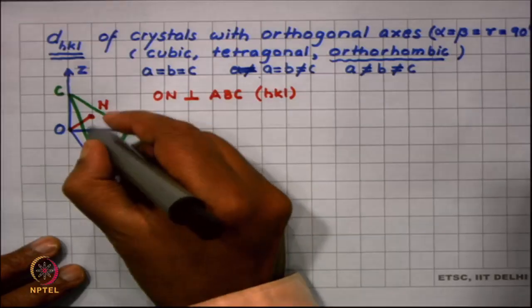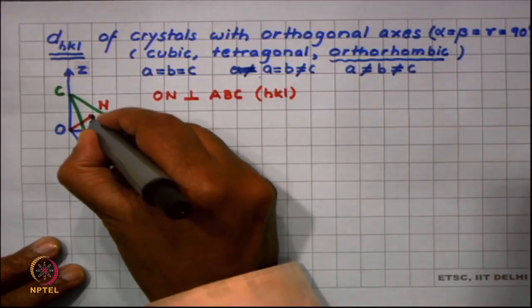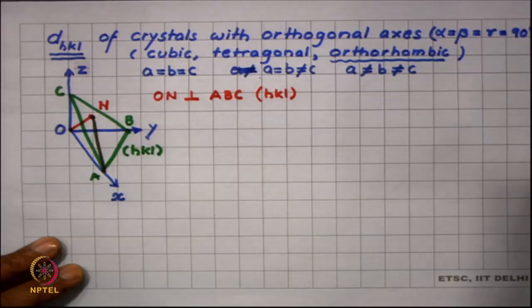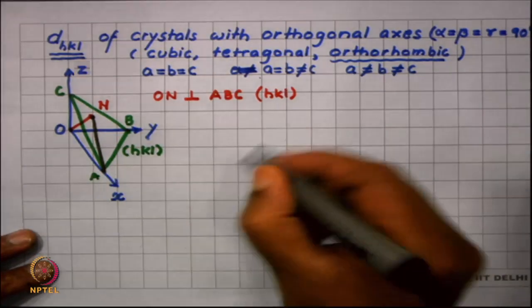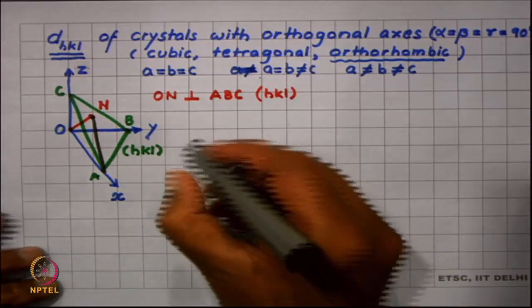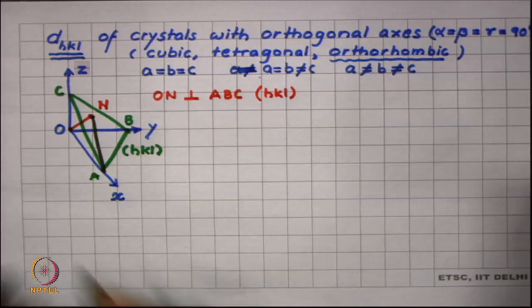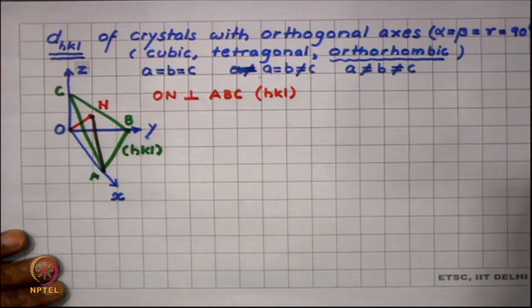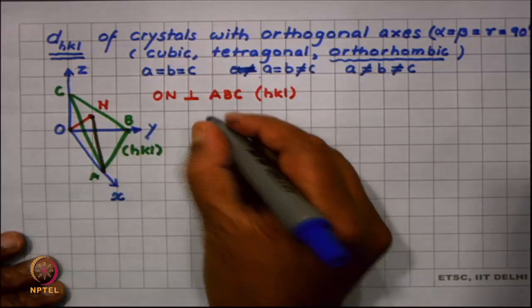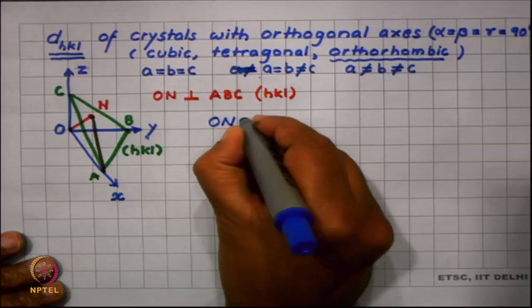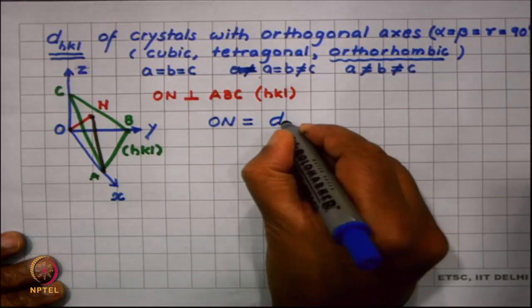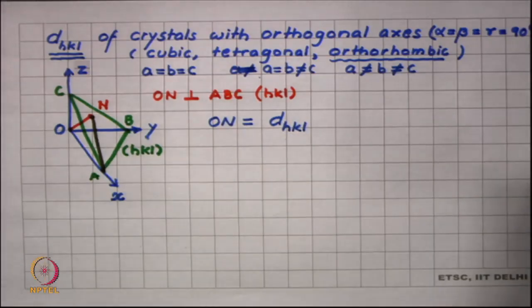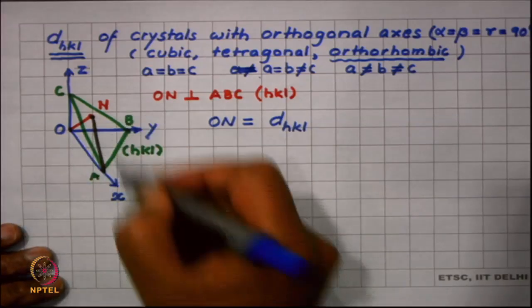Now let me connect n and a and let me look at this triangle ONA. Remember first that ON is the distance from the origin to the HKL plane, and that is why by the definition which we gave, ON is equal to d_hkl.